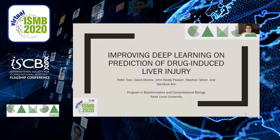Hi, my name is Peter Tran. I'm going to be talking about improving deep learning on the prediction of drug-induced liver injury. This is a project by my peers and I — Dave, John, Stephen — and our professor, Dr. Ted Ahn. We're in the program of bioinformatics and computational biology at St. Louis University. So let's jump into it.